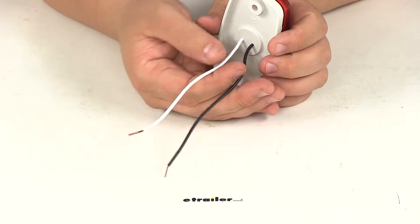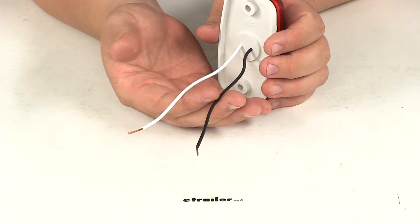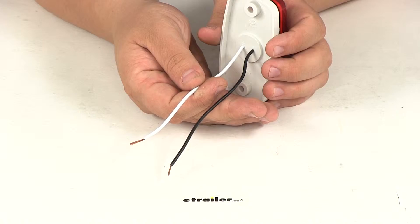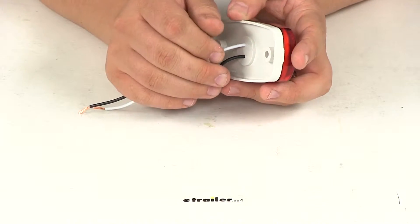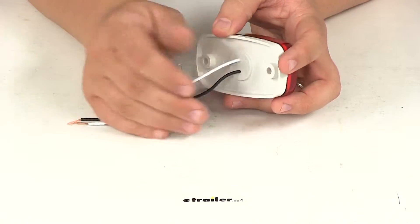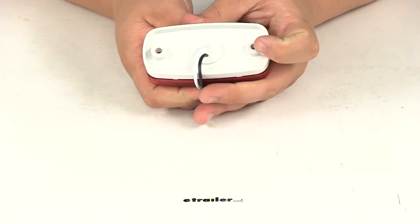Here on the back side it's going to have a two-wire design so you're going to have your black wire for power, your white wire for your ground connection. This is a surface mount installation so it's designed to mount on the surface of your trailer. Hardware is not included.